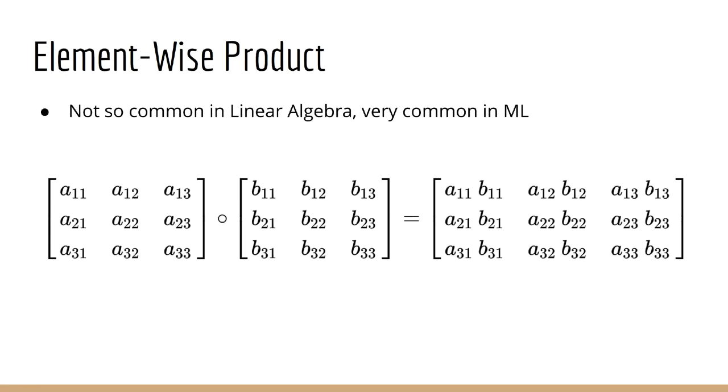Yet another common operation is the element-wise matrix product. This is an operation that they don't really teach in linear algebra, yet in practice, is very common. Basically, it's exactly what it sounds like. You take each ijth element in A and multiply it by the ijth element in B. And clearly, this requires that both A and B have the same shape, which will also be the shape of the output.